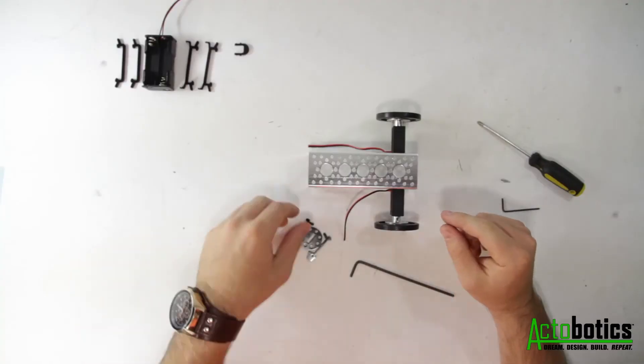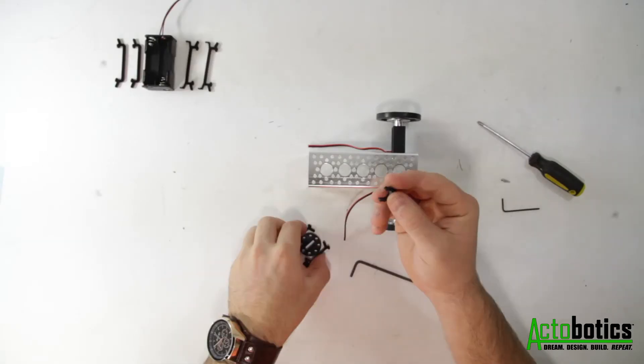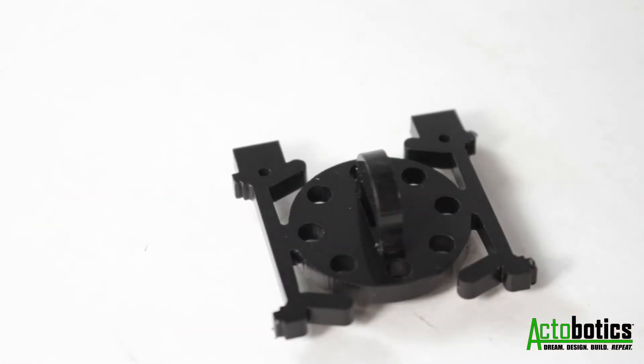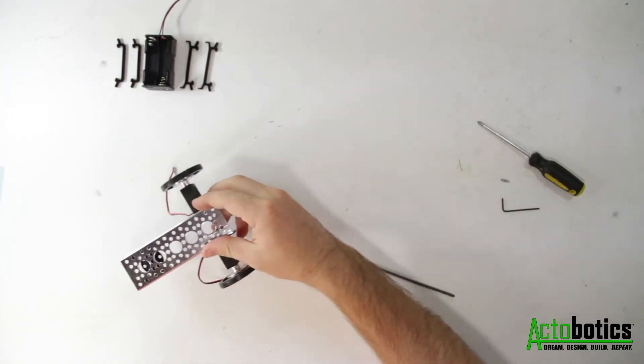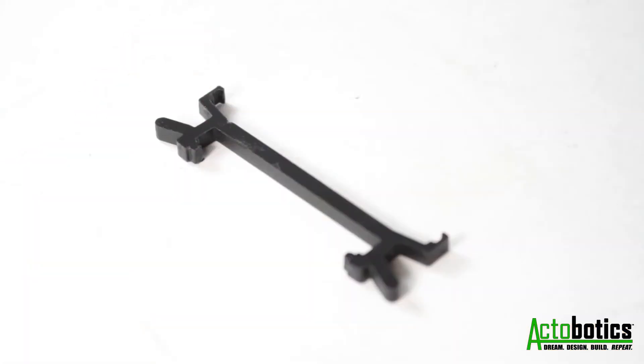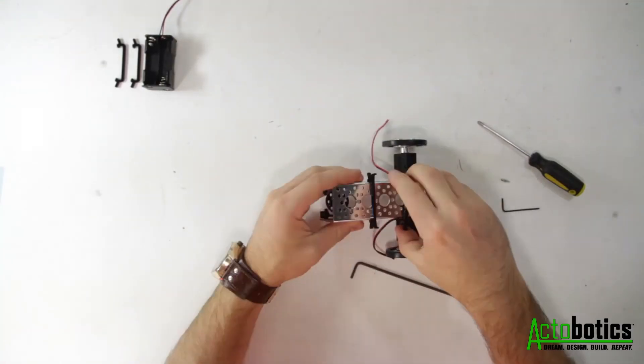Next combine the sensor plate with the caster insert attachment. Once they're together it snaps into the channel with the caster facing outward. Next you have your Arduino mount brackets. These snap directly into the channel.